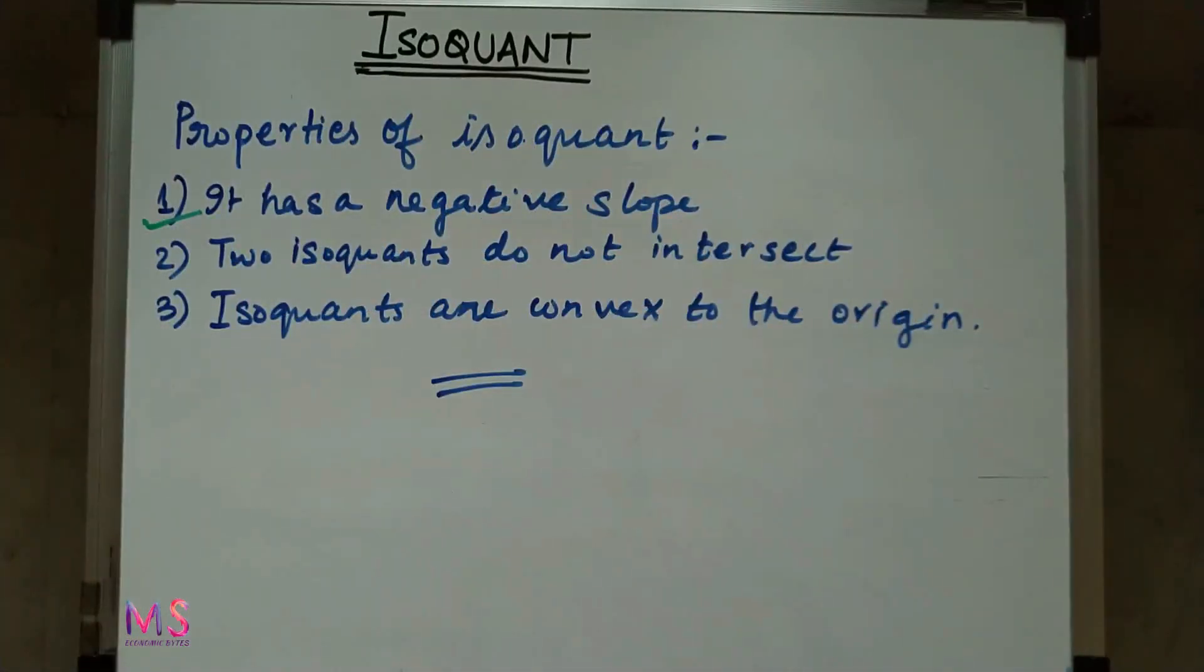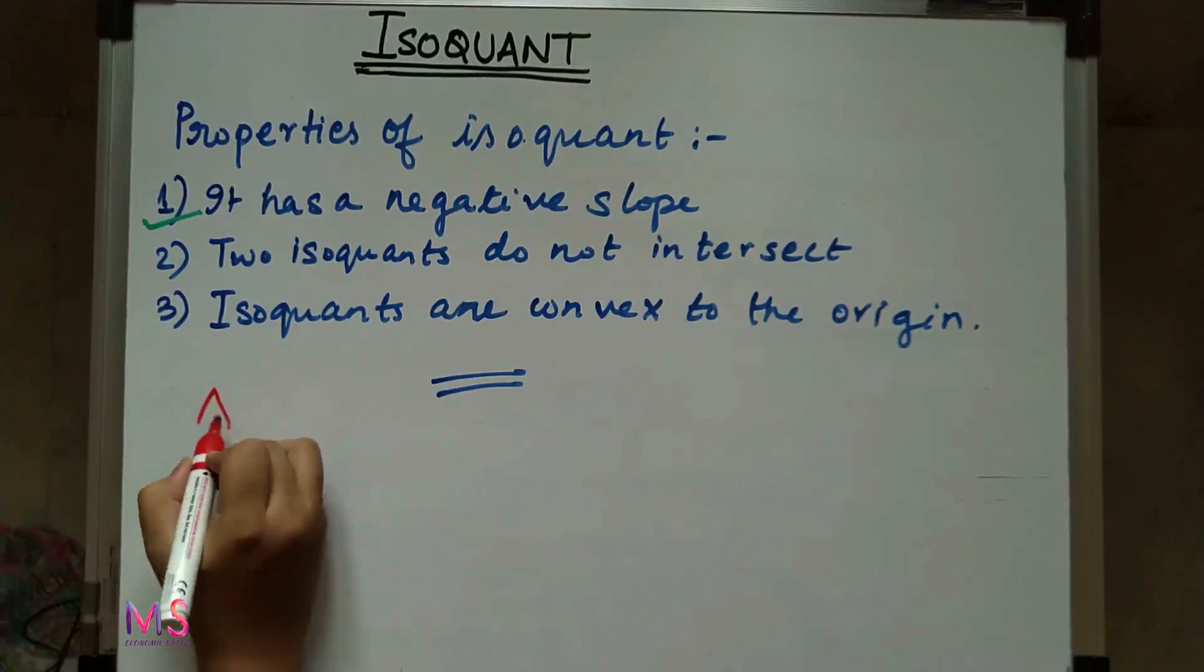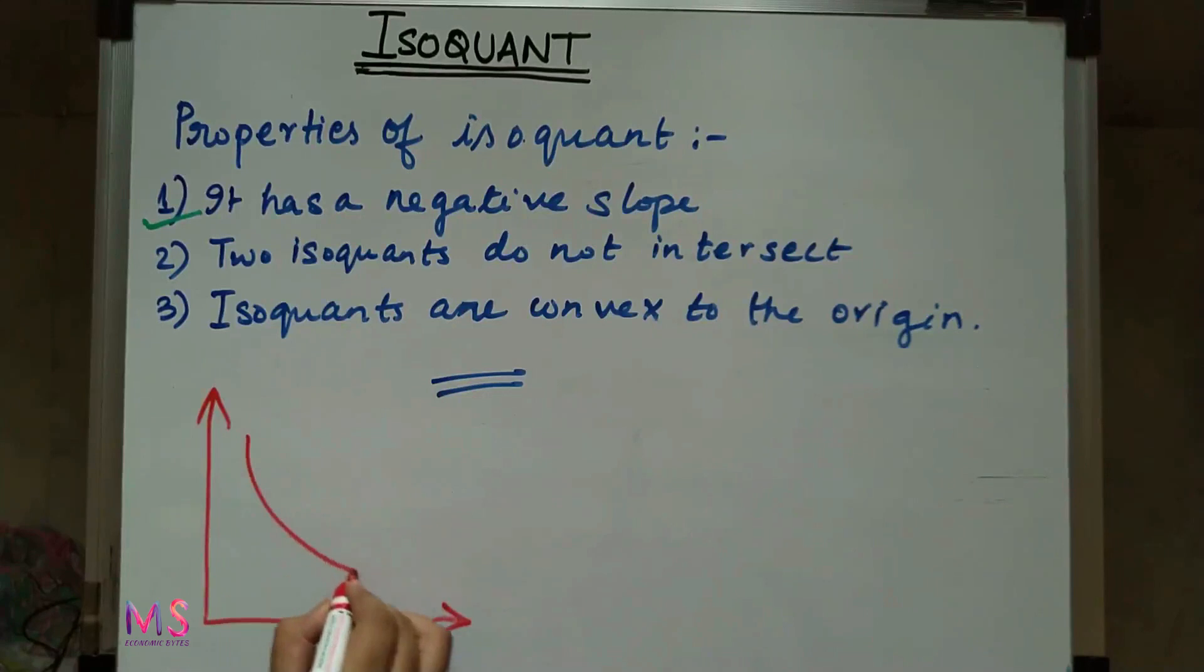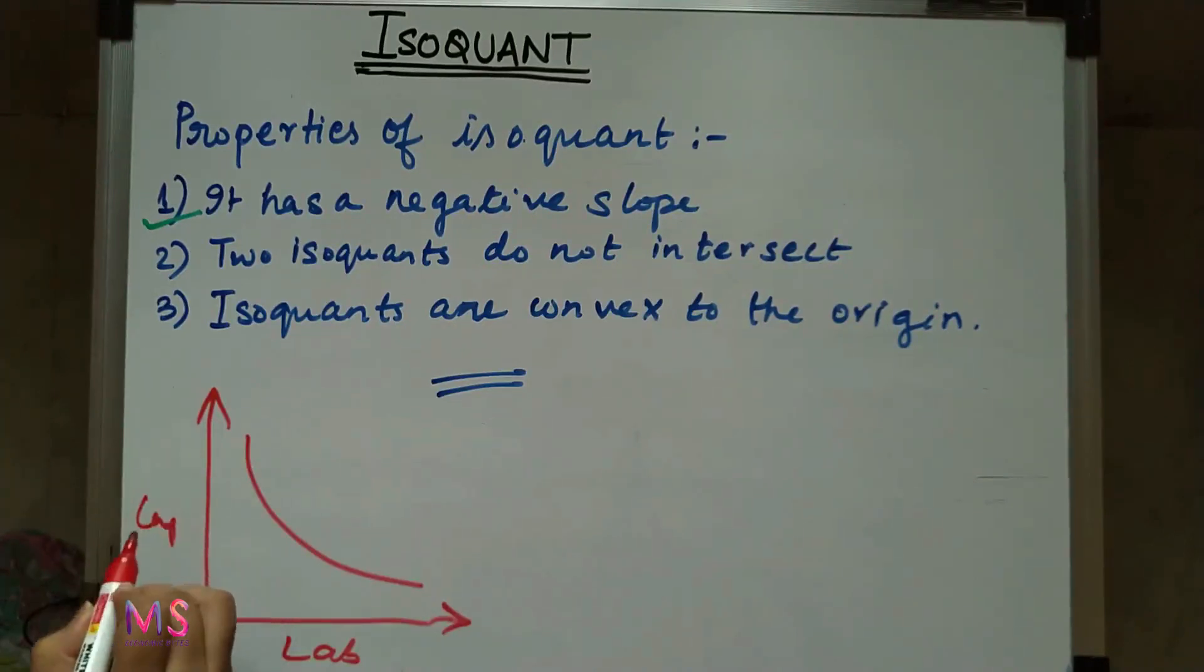The first property here is that isoquant has a negative slope; it slopes from left to right. This happens because when we reduce the quantity of one factor, say labor, the quantity of the other factor, capital, is increased in order to maintain the same level of output production. Therefore, this leads to the isoquant having a negative slope.